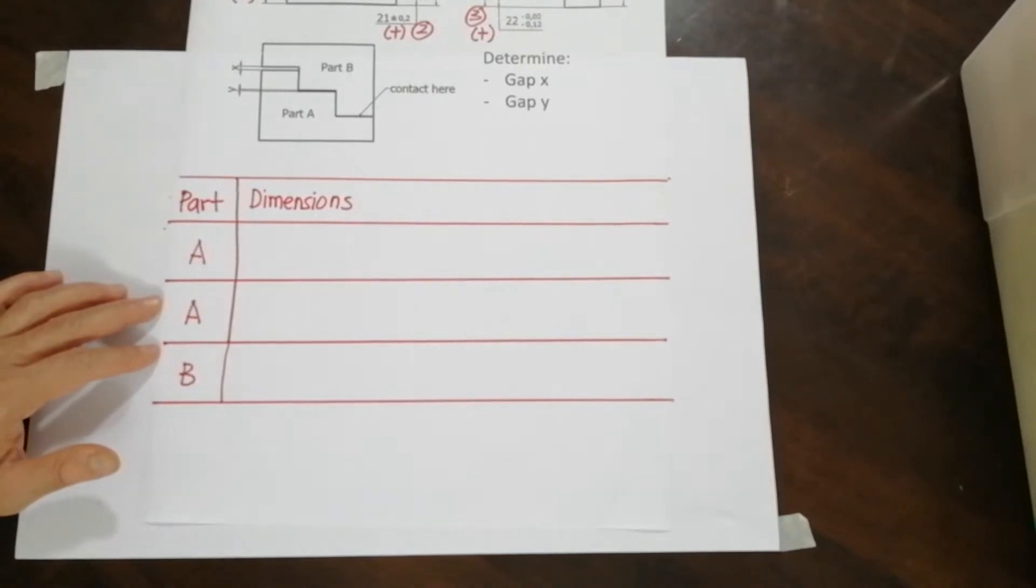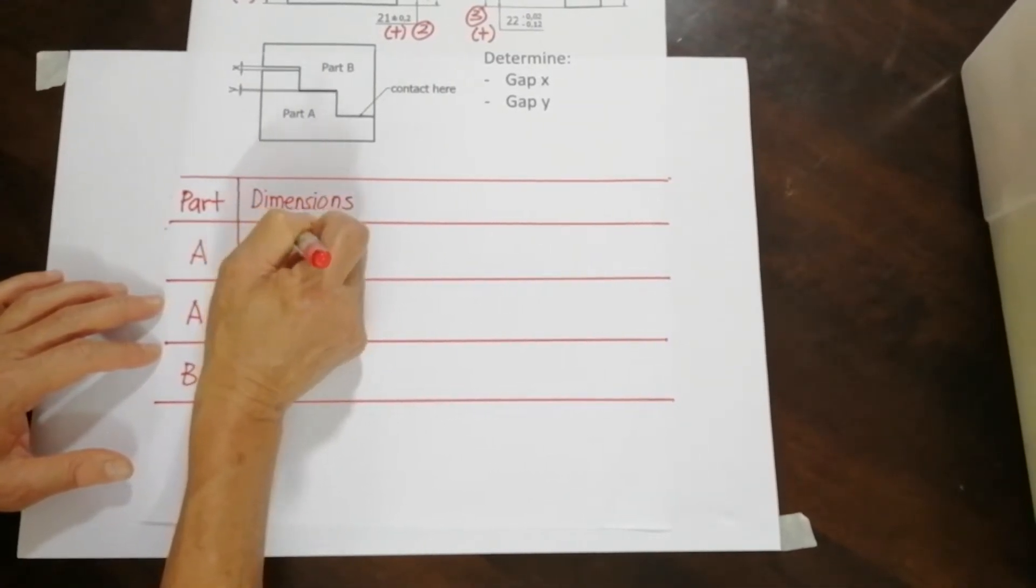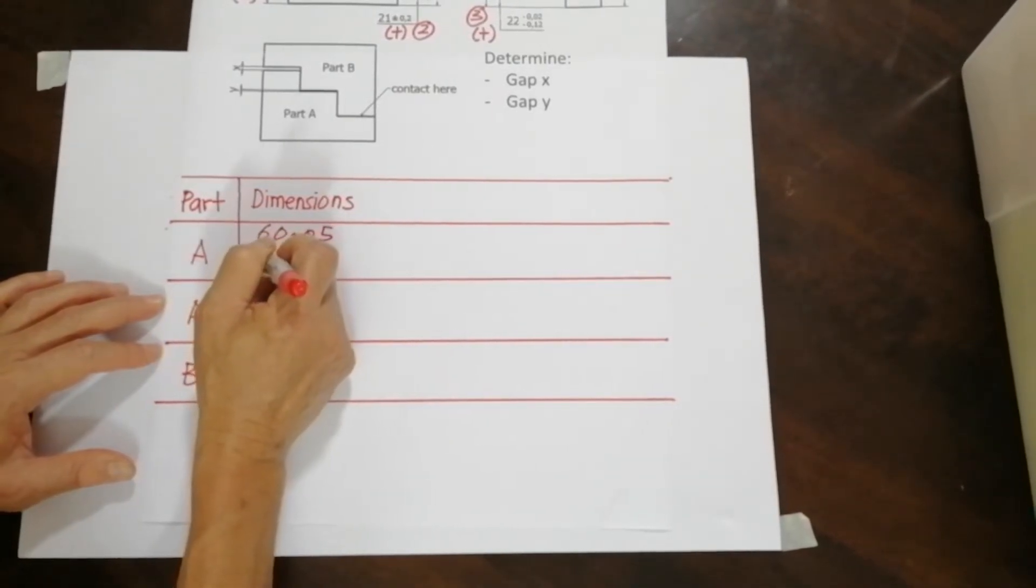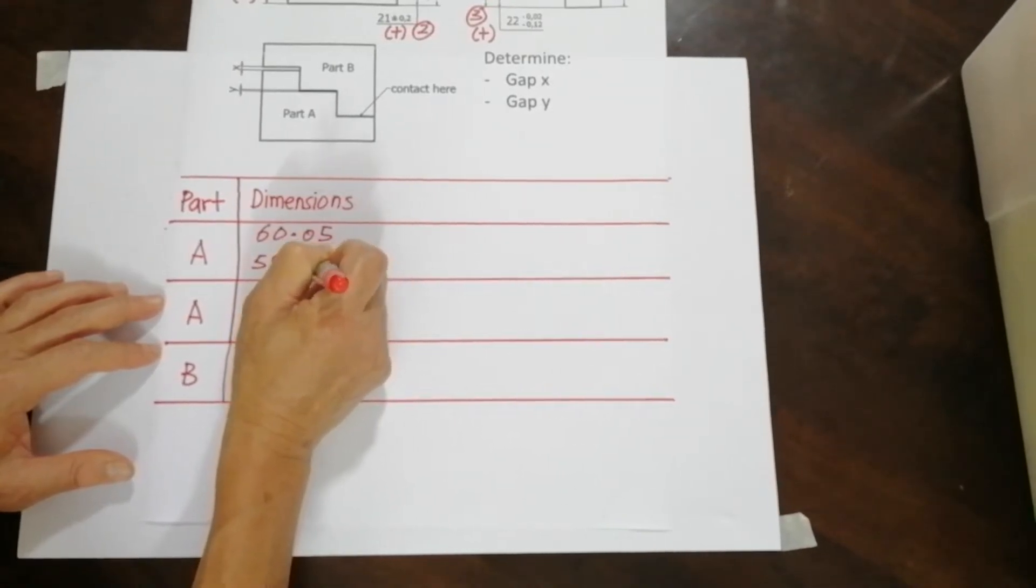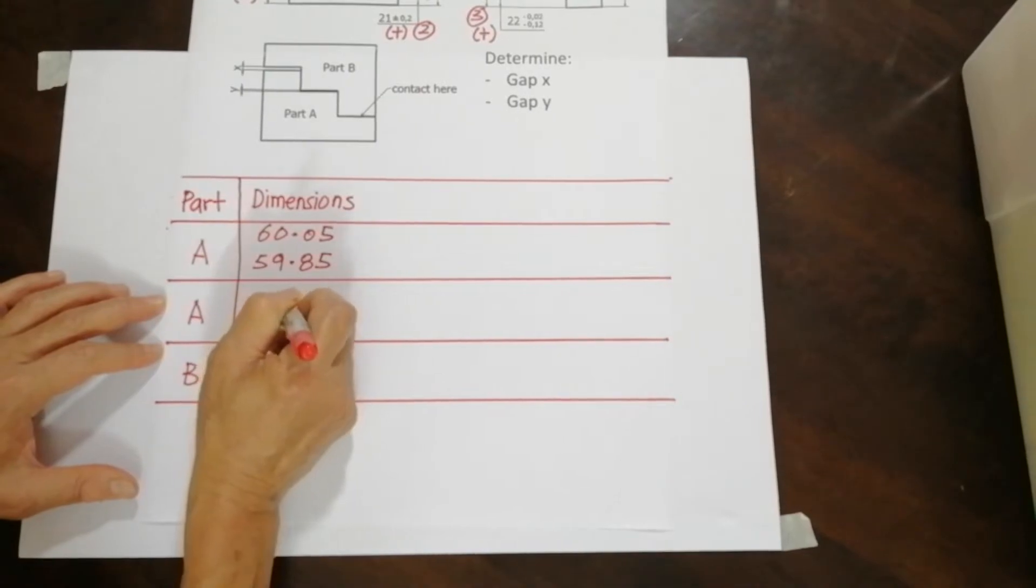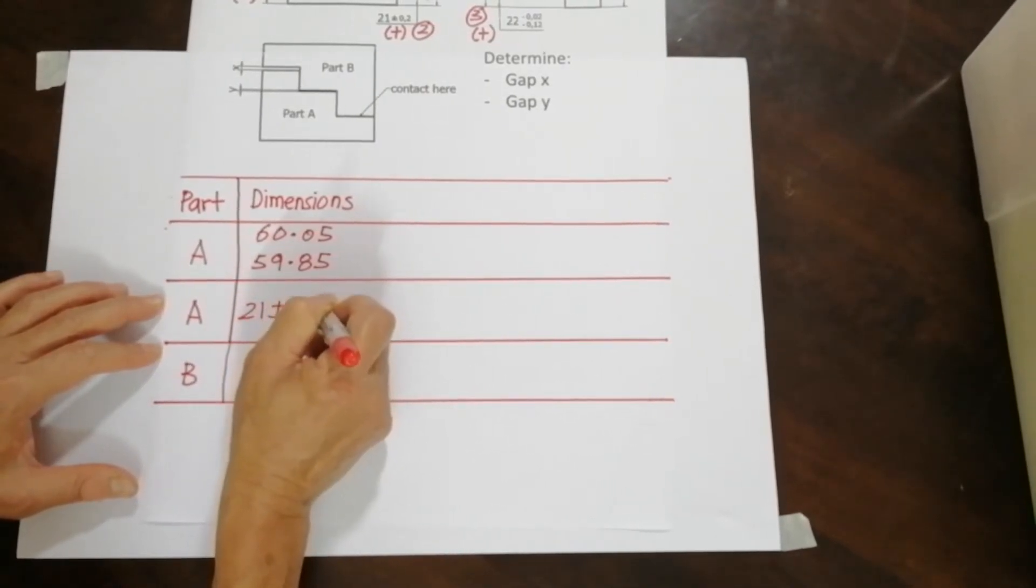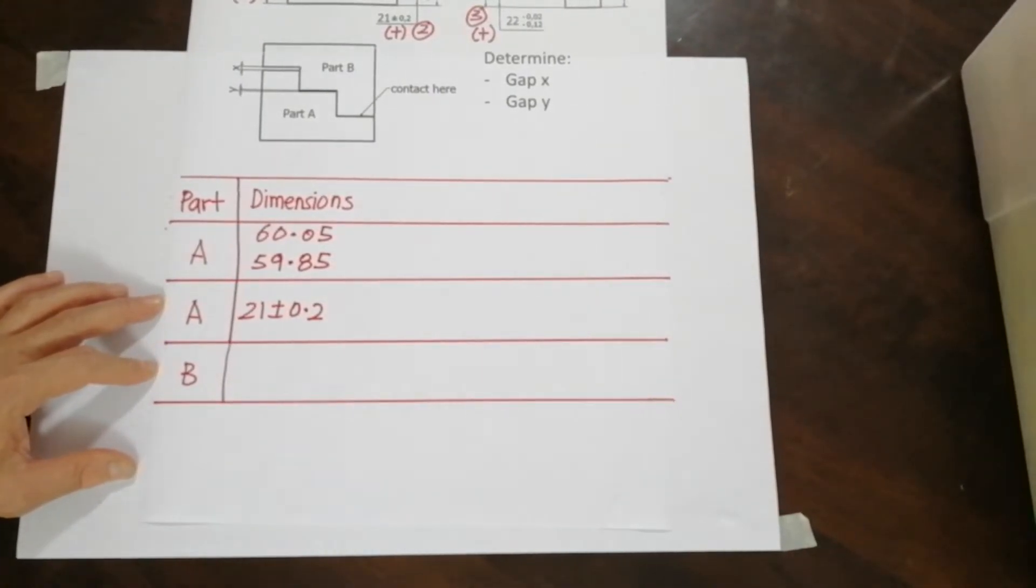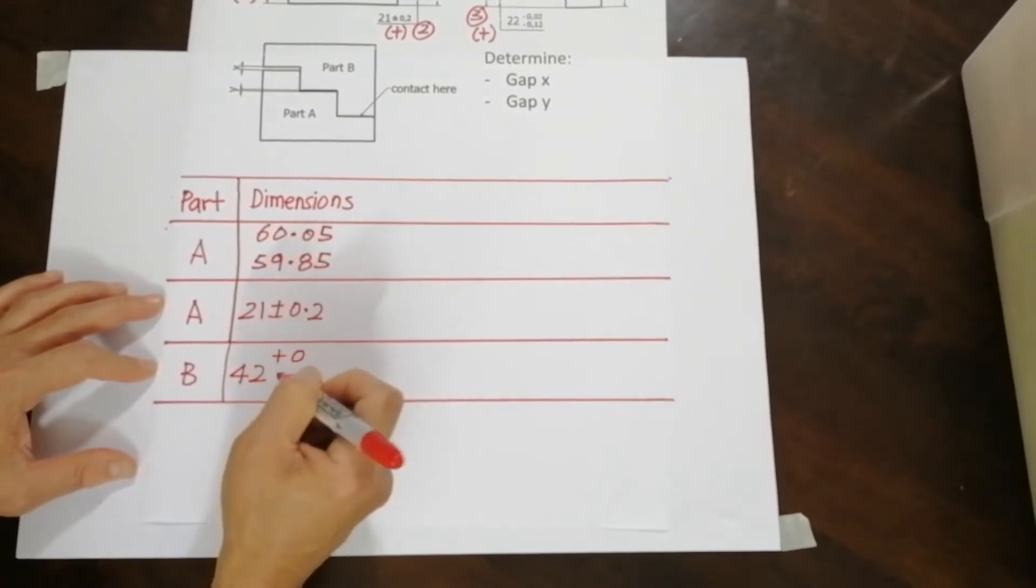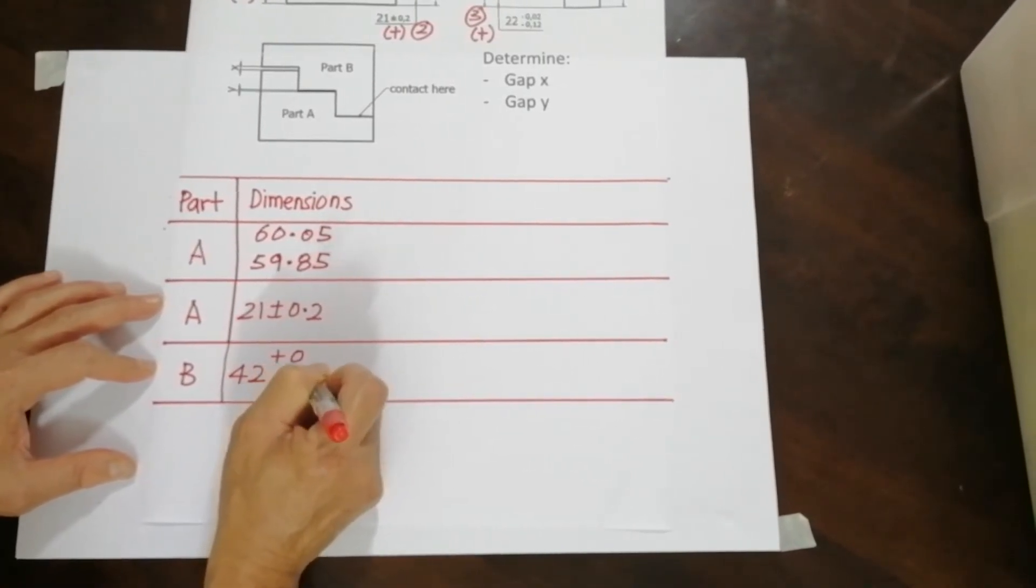So for part A, we have 60.05. For the other one, we got 21 plus and minus 0.2. And the third dimension involved is 42 plus 0 minus 0.16.